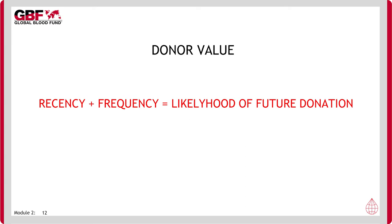How many donors a blood service has at its disposal to meet patient need is critical information, but without appreciating that donors exist at different stages, any raw number is largely meaningless. A regular donor may have a very high probability of giving again, and an inactive donor a very low probability. One approach is to adapt an often-used commercial model where you consider the recency and frequency of each donor — recency being the time since last donation and frequency a count of the number of units given. By modeling in this way, quite powerful predictions can be made about what size of donor base is required.